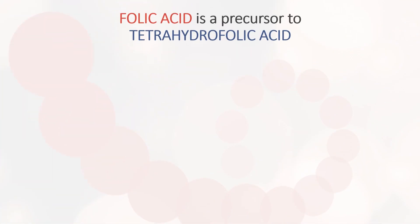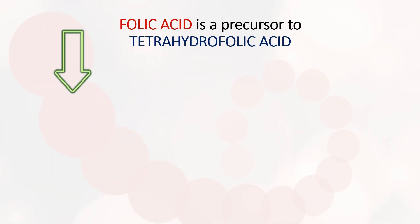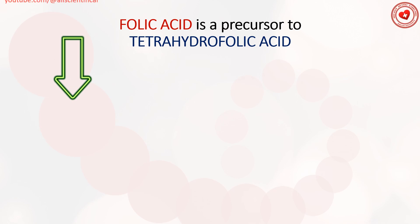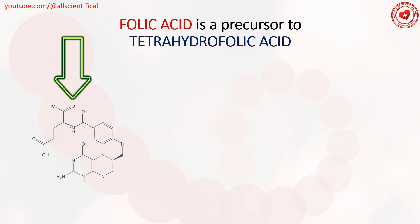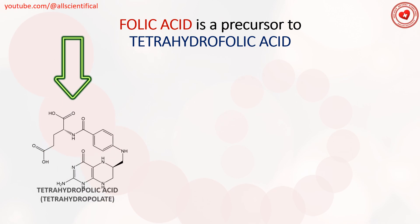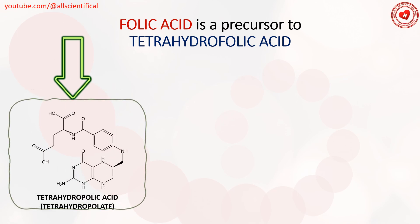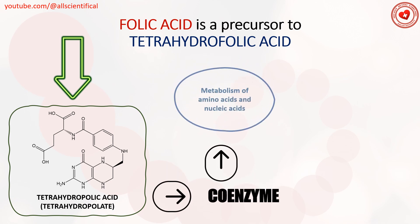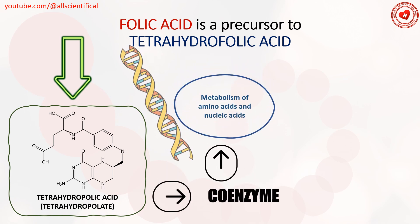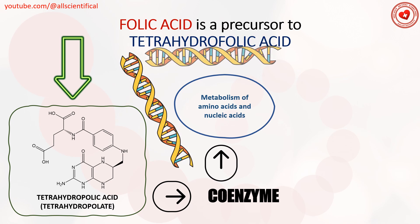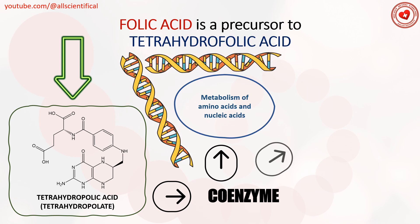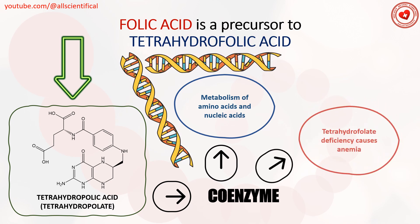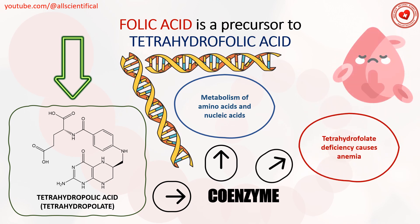Folic acid is a precursor of tetrahydrofolic acid, which is a coenzyme in the metabolism of amino acids and nucleic acids. Tetrahydrofolate deficiency causes anemia.